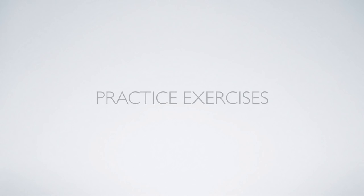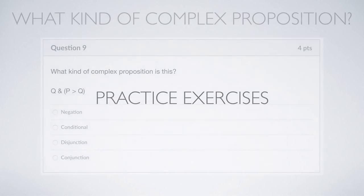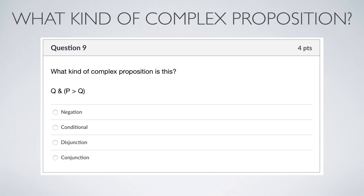Before we dive into truth tables, let's go over practice exercises identifying what kind of proposition we're dealing with, using parentheses and logical connectives. Here's an example: we've got parentheses and logical connectives. The way to do this is to look for what's outside the parentheses. Inside the parentheses, that's a conditional — but the overall proposition is not a conditional. When you look outside the parentheses, the overall complex proposition is a conjunction. It's a conjunction where one of the conjuncts is a conditional, but overall this is a conjunction.